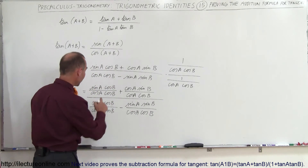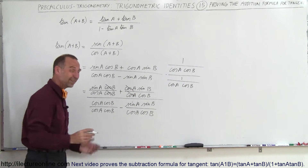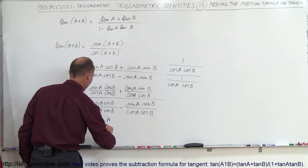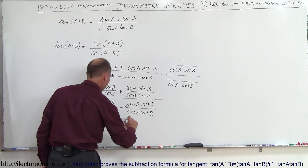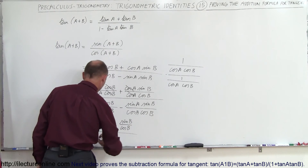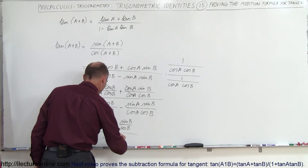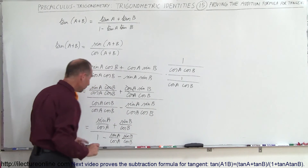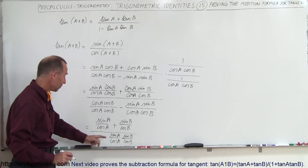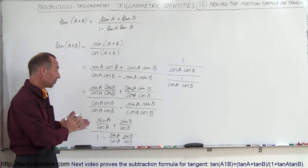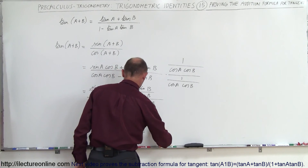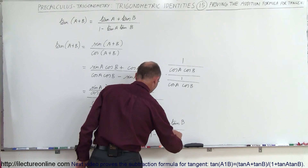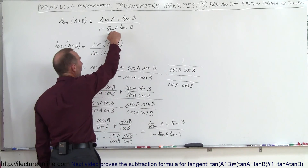Let's see what simplifies. We have cosine B over cosine B and cosine A over cosine A — this whole thing turns into 1. So we get sine A divided by cosine A, plus sine B divided by cosine B, all divided by 1 minus sine A over cosine A times sine B over cosine B. We can turn all of those into tangents, giving us the tangent of A plus the tangent of B divided by 1 minus the tangent of A times the tangent of B — exactly what we were looking for.